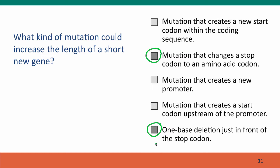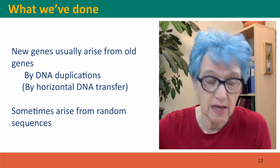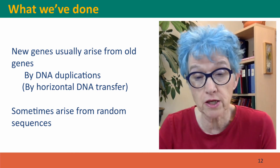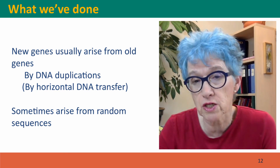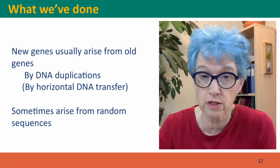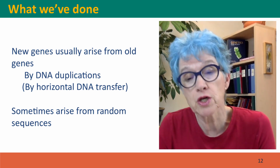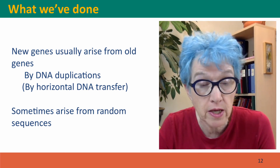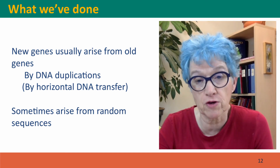It won't function as a stop codon for this gene because it will be out of frame from the start codon. So what we've done: we've considered how new genes usually arise from old genes, most commonly by duplication of DNA already in the cell, but occasionally by transfer of genes that had evolved in some other organism and whose DNA was brought into the cell. We also talked about how genes can arise from random sequences if, just by chance, there's a signal for transcription and a reading frame long enough to generate a functional protein.